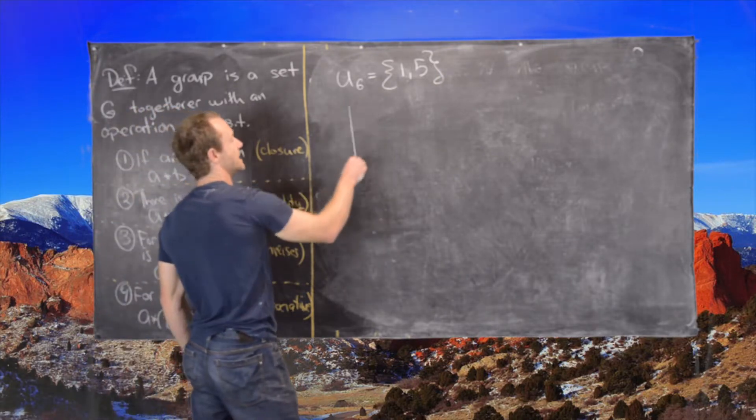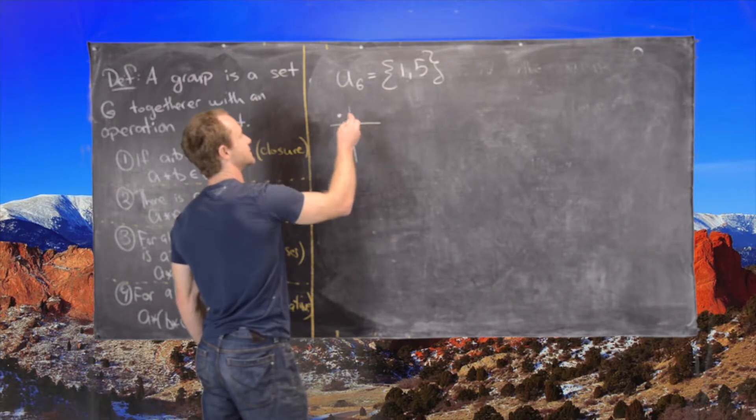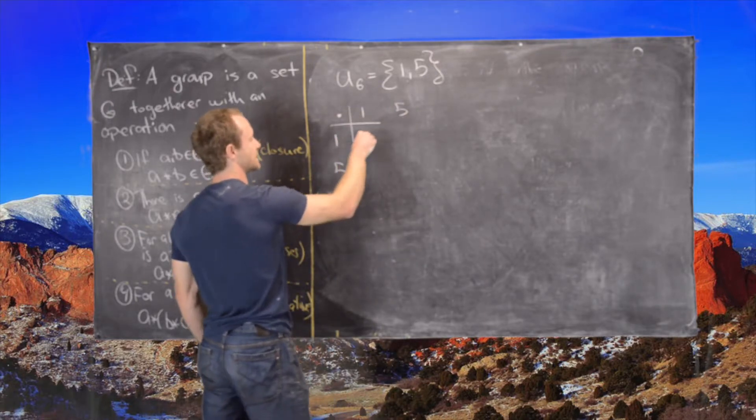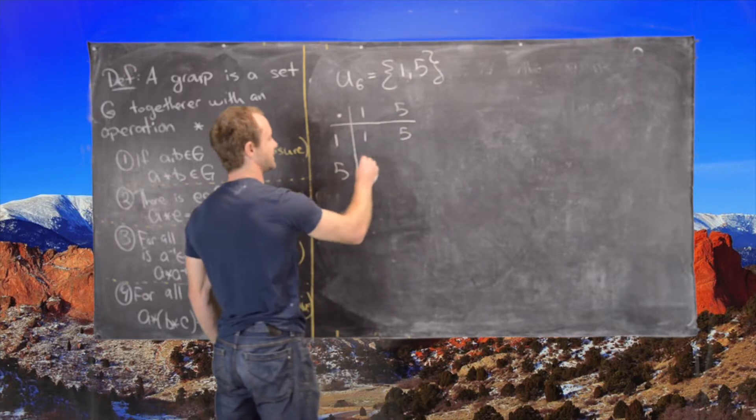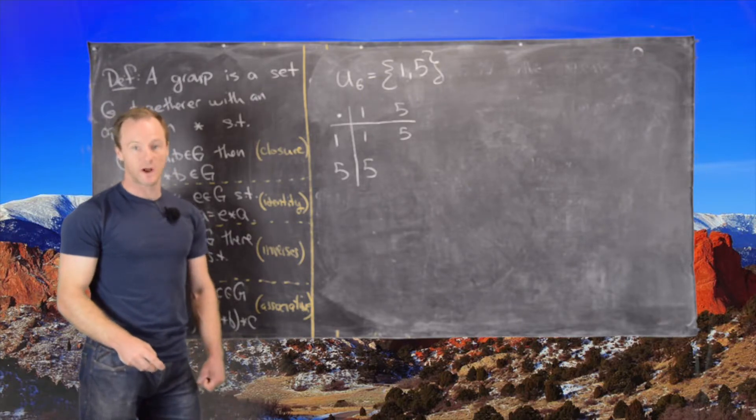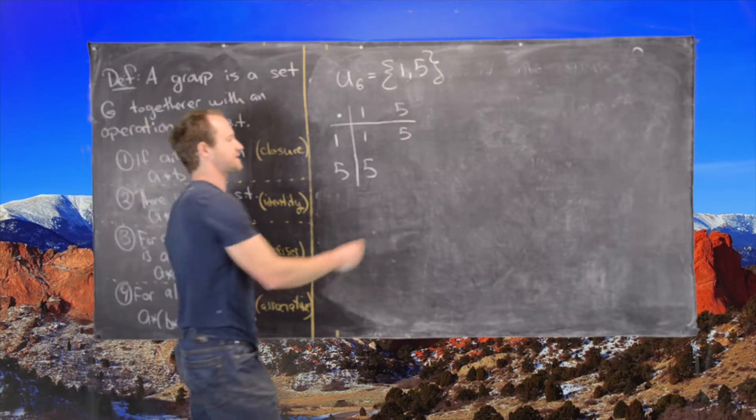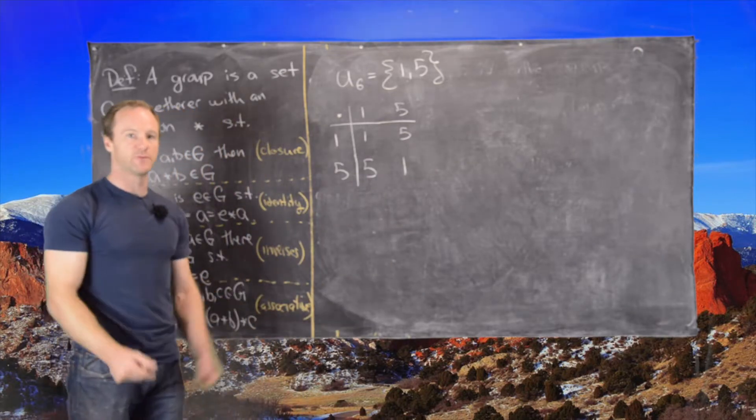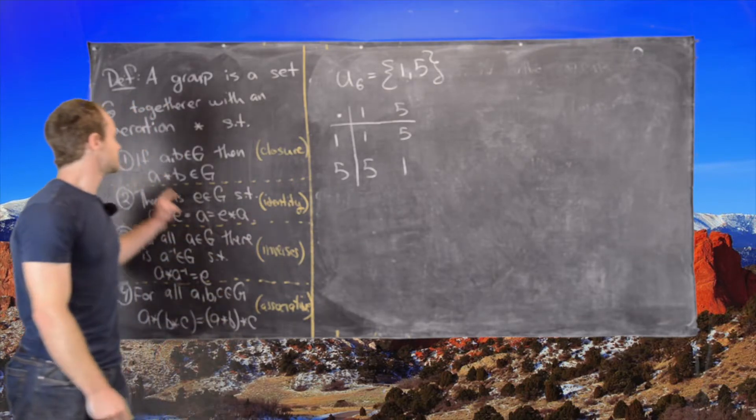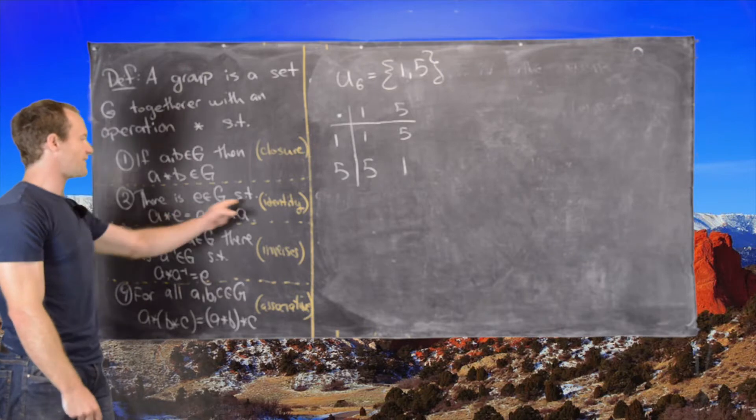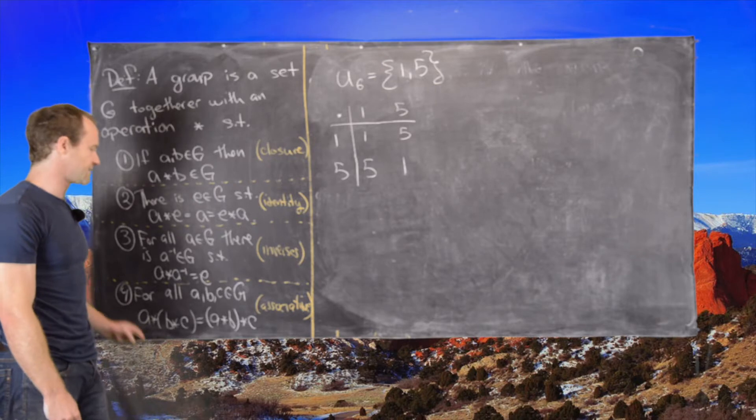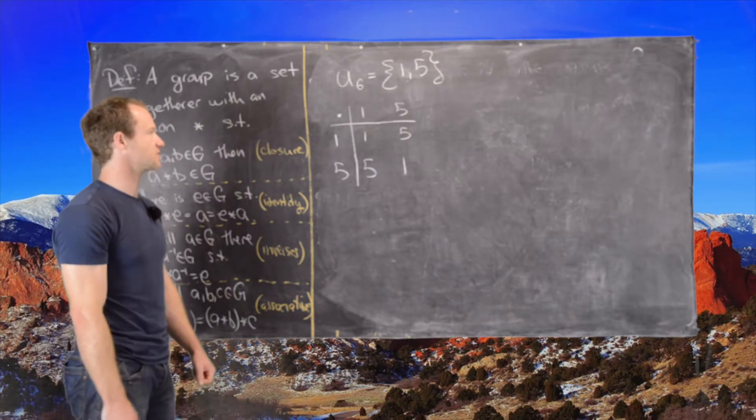If we make a multiplication table here, with multiplication modulo 6, we have 1 and 5 on both axes. 1 times 1 is obviously 1, 1 times 5 is obviously 5, 5 times 1 is 5, and then 5 times 5 is 25, but since we're working modulo 6 that equals 1. Even though we've proven this in general, we can see immediately that this is a group. We have closure under multiplication, an identity of 1, everything has an inverse—in fact everything is its own inverse—and the associativity is inherited from the integers.